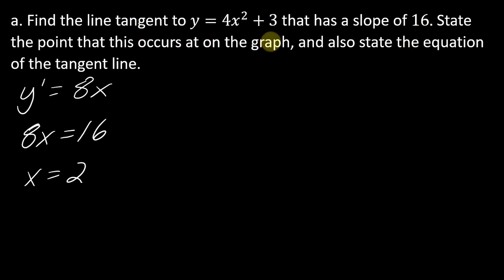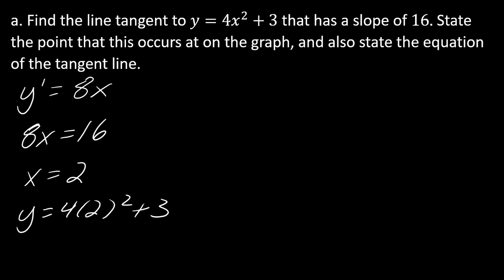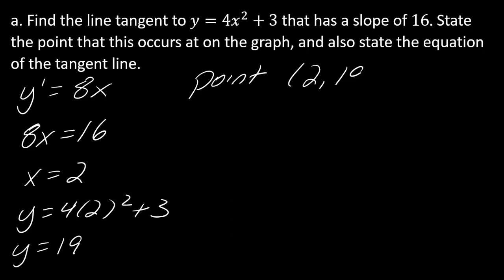The problem says to state the point that this occurs at on the graph. Keep two things straight: to find the xy coordinate, you plug x back into the original function, not the derivative. The derivative is for the curve's slope, the original function gives you the point. So plugging x=2 into y equals 4x squared plus 3 gives y equals 4 times 4 plus 3, which is 16 plus 3, which is 19. So the point is (2, 19).